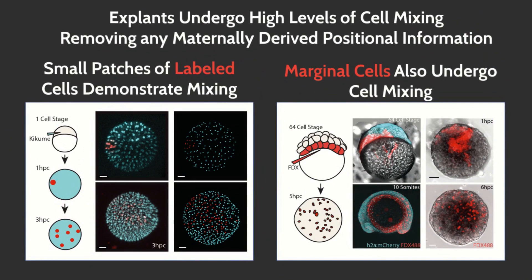We demonstrate that vegetal-based blastomeres also undergo significant mixing, by injecting these cells with a fluorescent high molecular weight dextran at the 64-cell stage, prior to cutting the explant at the 256-cell stage. We observe that after six hours in culture, the labelled cells are found across the entire explant. This demonstrates clearly that any pre-pattern information provided to the cells from the yolk, prior to explanting, is distributed across the entire explant before elongation occurs.